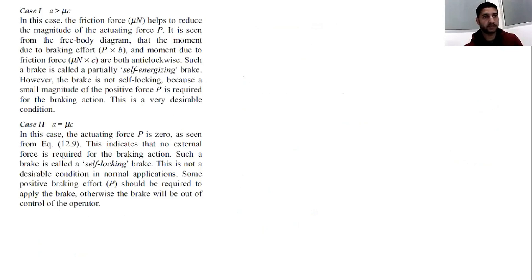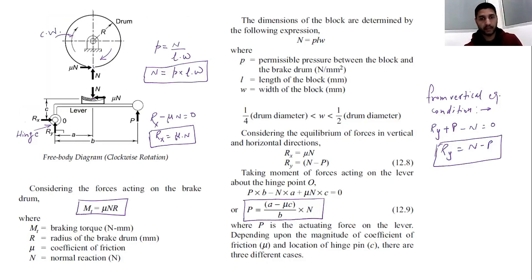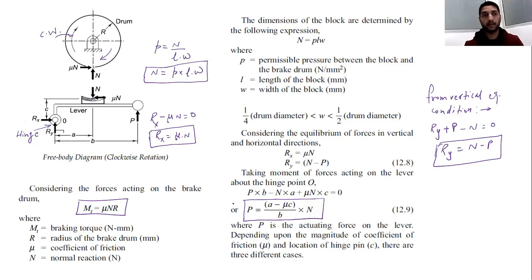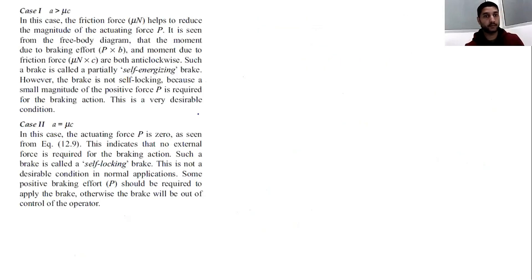Case one: if a is greater than μc, then from the formula P = (a − μc)/b × N, the overall value of P is positive. This means we must apply a positive force to stop the drum — this is called a self-energizing brake.